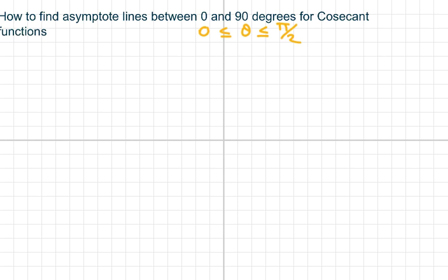So I'd rather call this between 0 and pi over 2, instead of 0 to 90 degrees. The first thing I'm going to notice is that cosecant of theta equals 1 over sine of theta. And I can't divide by 0, because that gives me undefined, and that's what generates the asymptote.